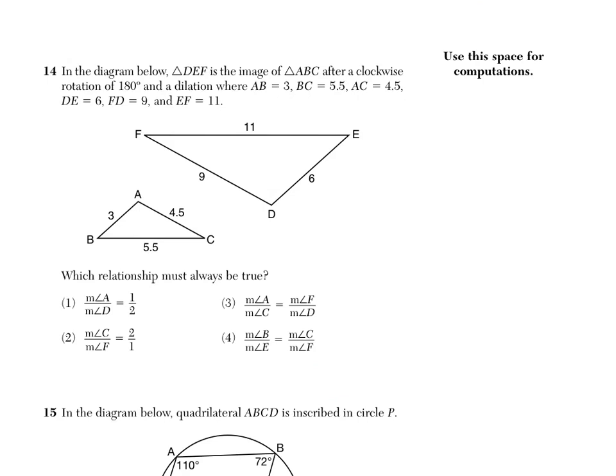Number 14 says, in the diagram below, triangle DEF is the image of ABC after a clockwise rotation of 180 degrees and a dilation, and then it lists a bunch of line segments and their measures. Which relationship must always be true? So we're going to be able to cancel out three of them and then there's one true statement. Now this is tough to think about because normally we think about triangles that are similar have congruent angles and sides in proportion. It's not typical to think about angles in proportion, but it's possible to do.